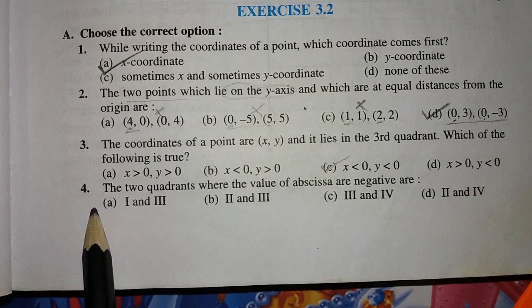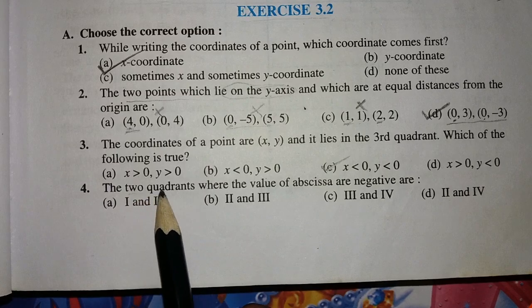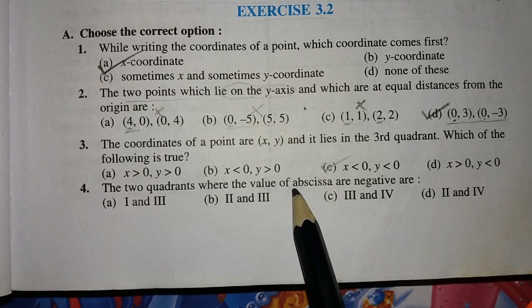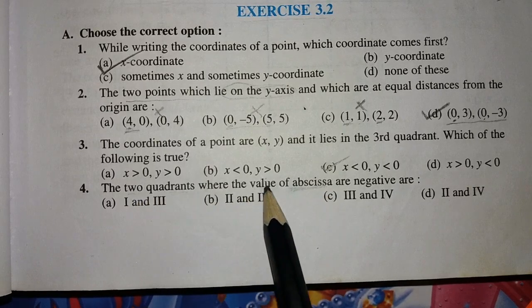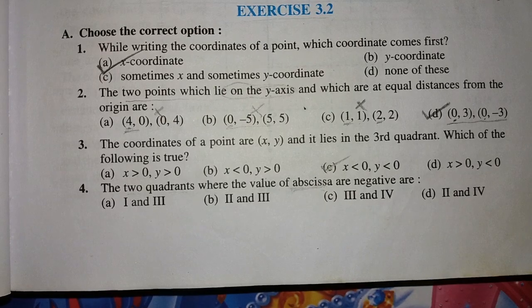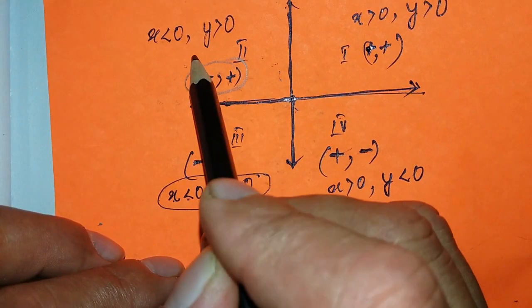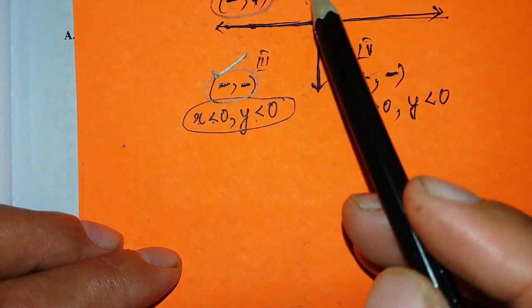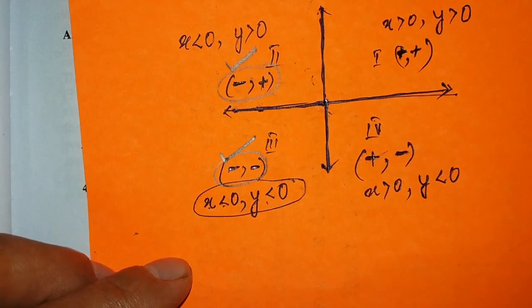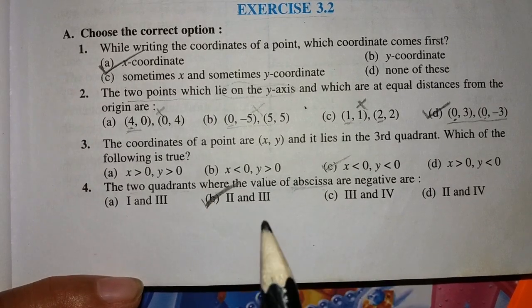Question 4: the two quadrants where the value of abscissa are negative. Abscissa means the X coordinate. X is negative in the second quadrant and also in the third quadrant. So the answer is second quadrant and third quadrant — option B is our right answer.